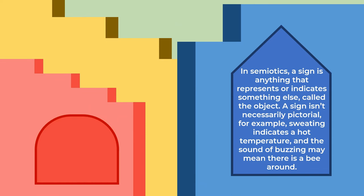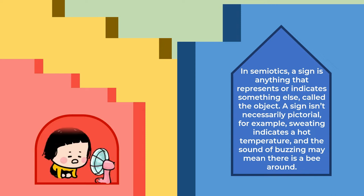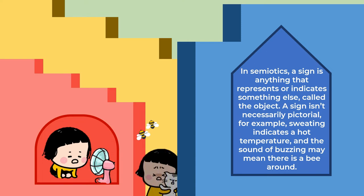In semiotics, a sign is anything that represents or indicates something else, called the object. A sign isn't necessarily pictorial. For example, sweating indicates a hot temperature, and the sound of buzzing may mean that there is a bee around.